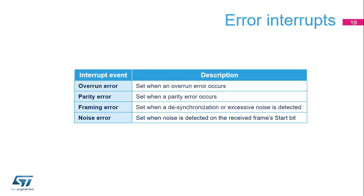Several error flags can also be generated by the LPUART as shown in the table. The overrun, parity, and framing error flags are each set when the corresponding error occurs. The noise error flag is set when noise is detected on the received frame's start bit.